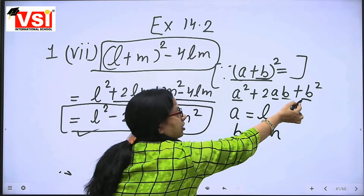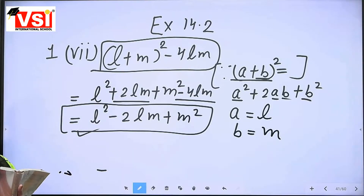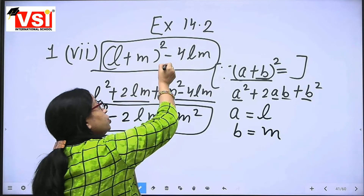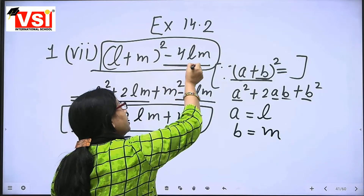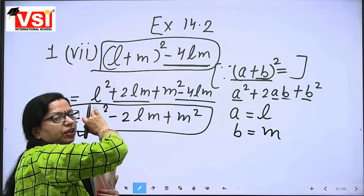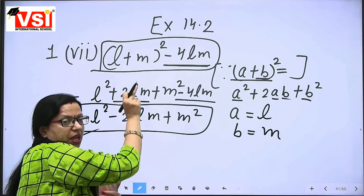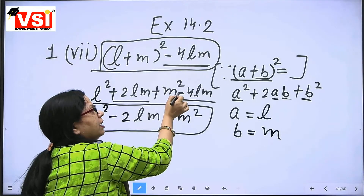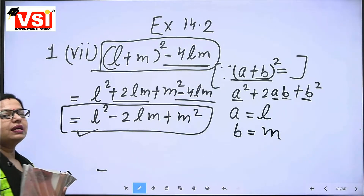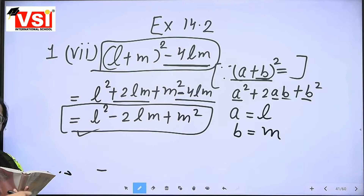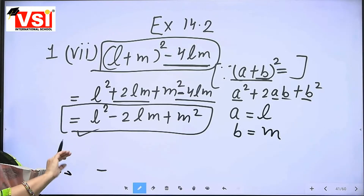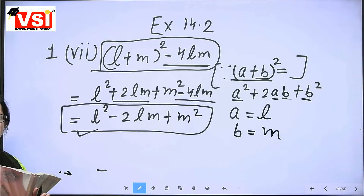We need B square, and B value is M. We cannot leave this term since it is already given in the sum. So we also write it in the step — we write minus 4LM in front of this. Up to here the step is complete — we have opened it and also returned the remaining term.